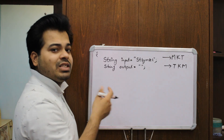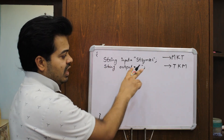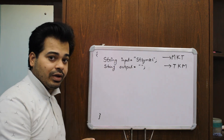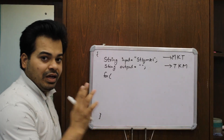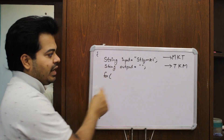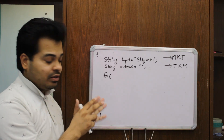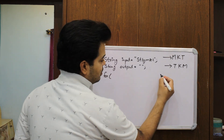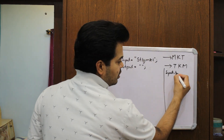Let's give the output string as just empty double quotes — nothing is there at the present moment — because this is my output which is not yet ready. I've written output as empty because I'm expecting my output to come here later. Then we can have a for loop. I need a for loop because I need to do something with this input string and get the output as the reversed string.